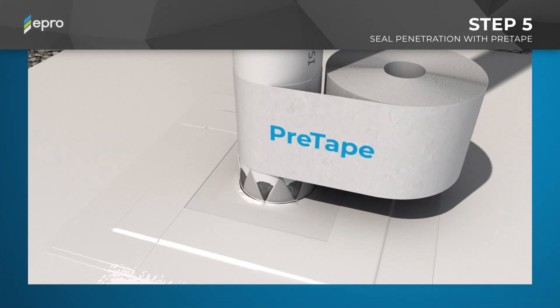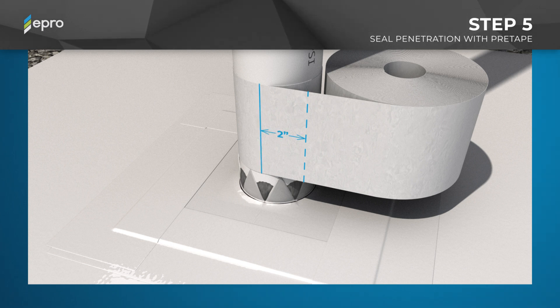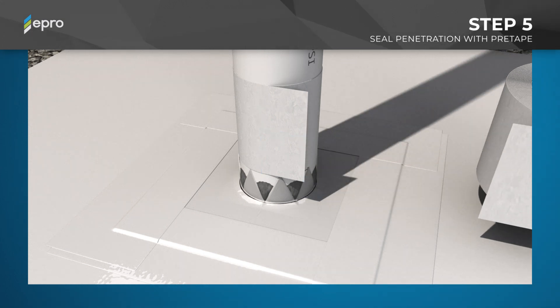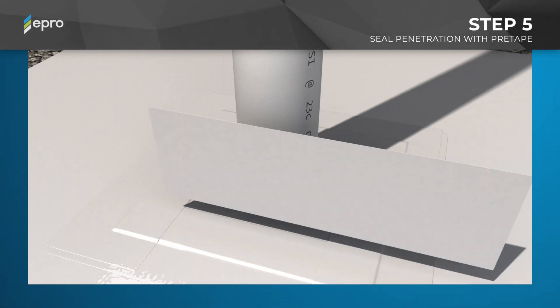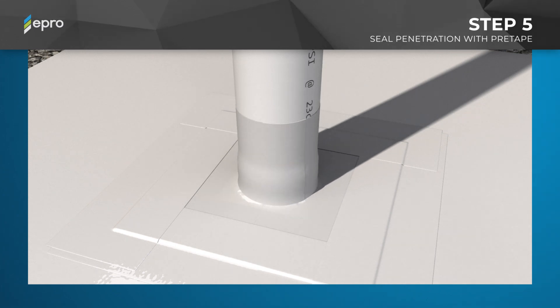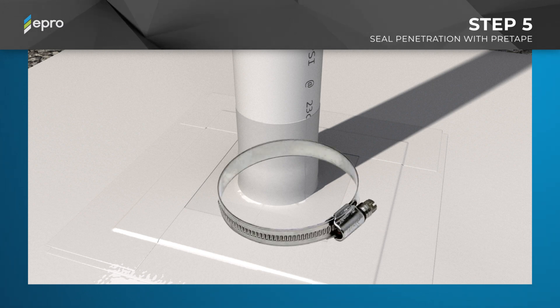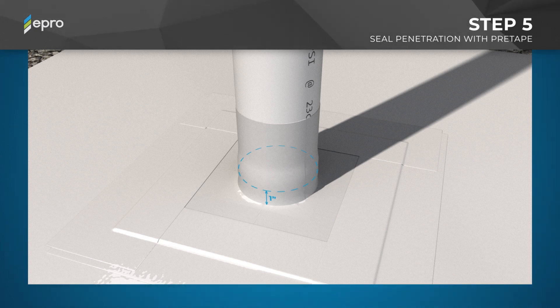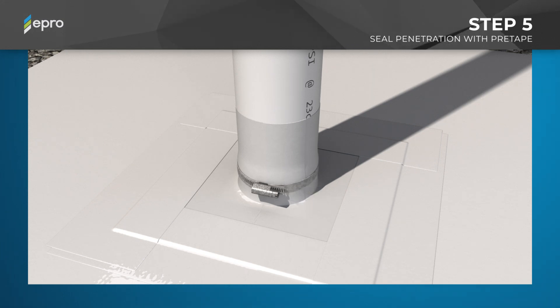Next, seal the target sheet to the penetration with PRETAPE. Wrap the roll of PRETAPE single-sided tape around the penetration and cut it after it overlaps 2 inches past the PRETAPE edge. This should create a minimum 2-inch tail. Next, remove the PRETAPE release liner and wrap the PRETAPE tightly around the base of the penetration, making certain to cover the PRETAC triangles from the target sheet. Press and roll the tape tightly to the penetration and smooth out any wrinkles. Finally, secure the PRETAPE around the base of the penetration with a stainless steel hose clamp positioned 1 inch above the target sheet, over the PRETAPE and PRETAC triangles. Tighten the worm gear and trim off the excess hose clamp tail.